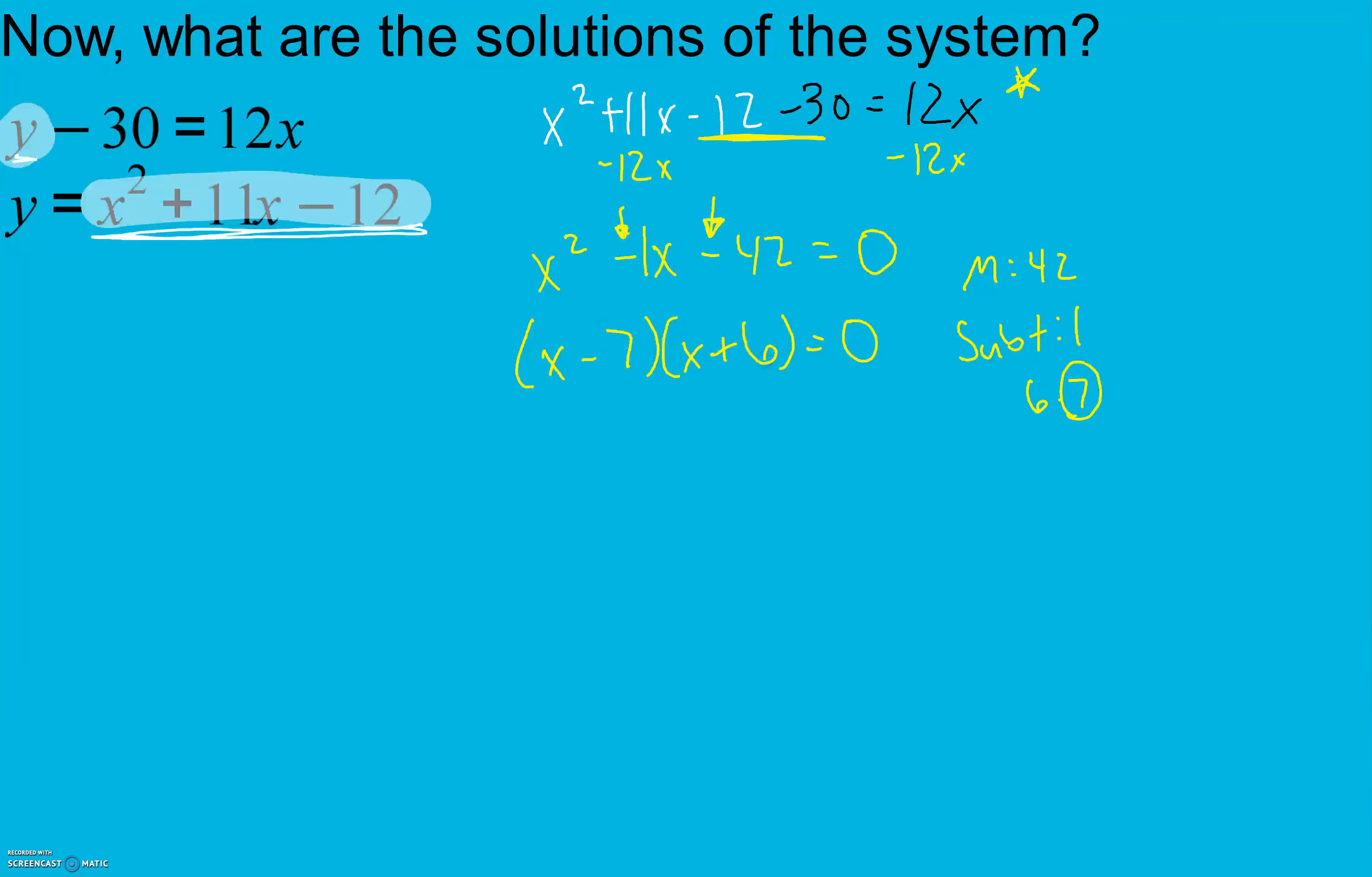My zero product property says the only way that I can multiply to 0 is if one of my factors equals 0 or my other factor equals 0, sometimes both. So here we want to solve for x by adding 7 to get x all the way by itself and subtracting 6 to get x all the way by itself. So my x values in my ordered pairs are 7 and negative 6.